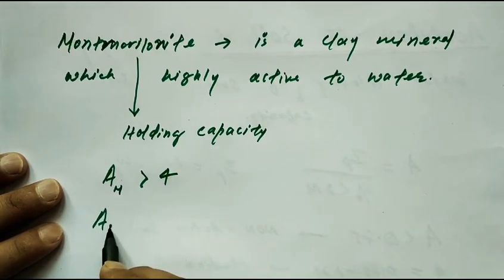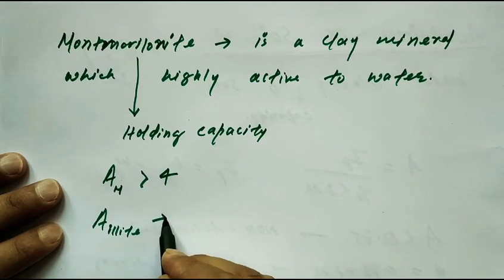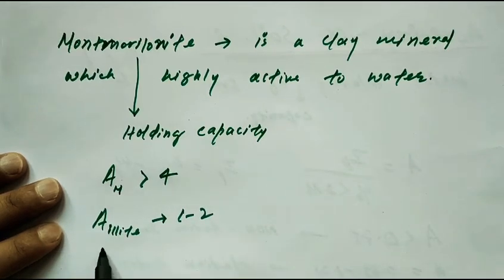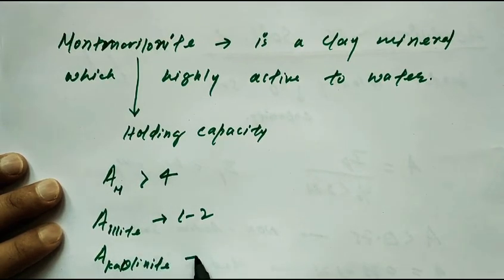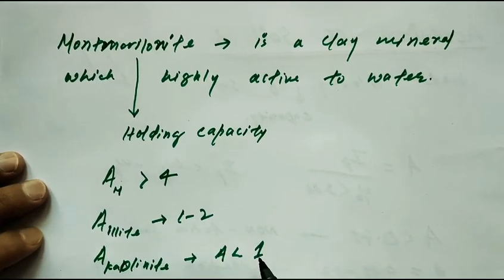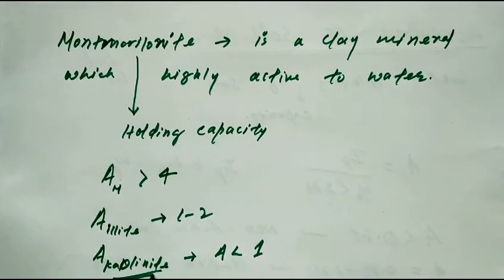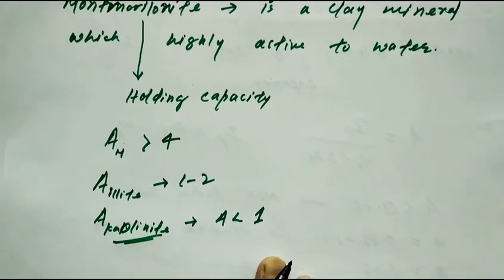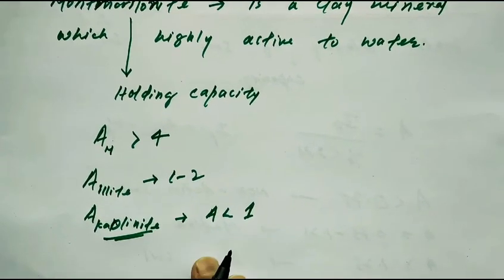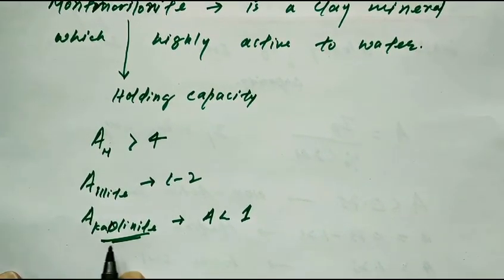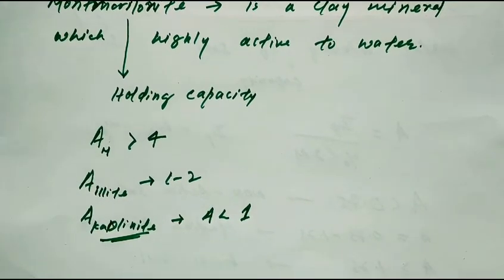The activity of Illite (I-L-L-I-T-E), also a clay mineral, lies between 1 to 2. Another mineral is Kaolinite (K-A-O-L-I-N-I-T-E), whose activity is less than 1, so it is like an inactive soil.